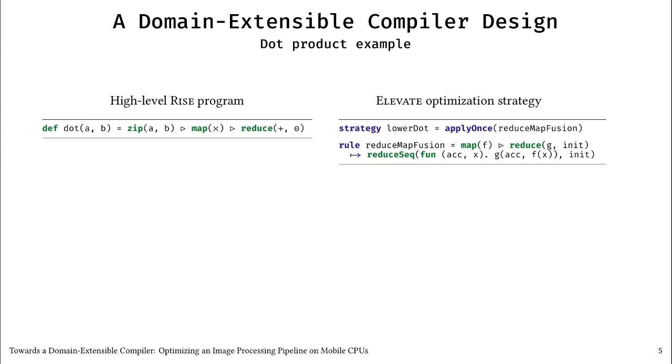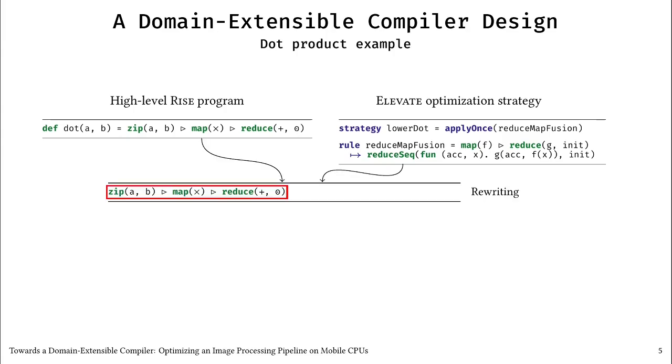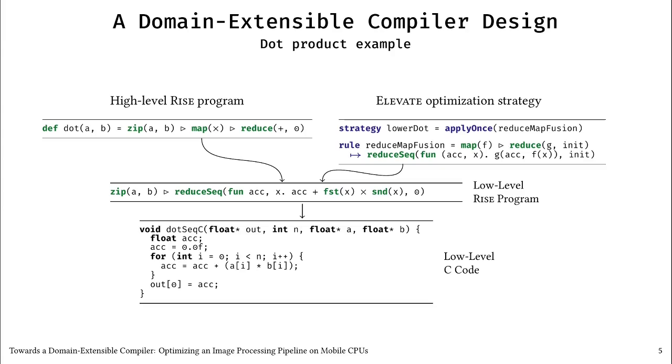Let us look at how this traversal behaves step by step. The first attempt fails on the entire dot program, because there is no direct match with the left-hand side of the rewrite rule. The second attempt on ZIP also fails. And the third attempt succeeds. Now there is a clear match with the left-hand side of the rewrite rule, which is applied. We can say that the resulting program is low-level, because it only contains patterns that have a clearly defined implementation. C code is now generated. The REDUCE-SEC pattern has been translated into a sequential reduction loop, while the ZIP, FST, and SND patterns have been translated into plain array indexing.